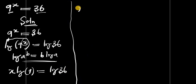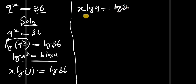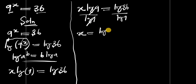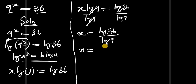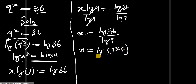So we have x·log(9) = log(36). Let's divide both sides by log(9); log(9) cancels, giving x = log(36) / log(9). Now, 36 can be written as the product of 9 and 4, so we have x = log(9 × 4) / log(9).